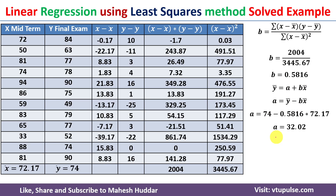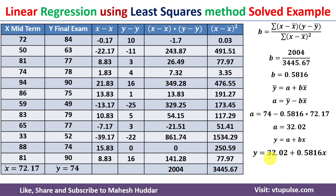Solving that equation gives a equal to 32.02. So the intercept is 32.02 and the slope is 0.5816. Substituting into the linear regression equation: y equals 32.02 plus 0.5816x. This is the best fitting line for the given dataset using the least square method.